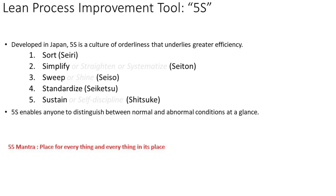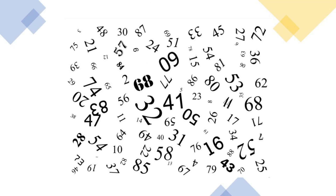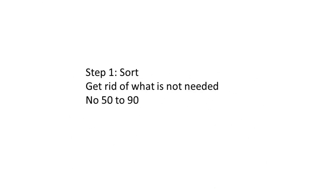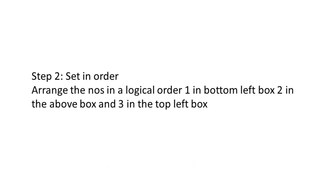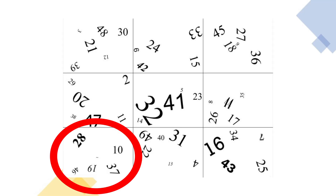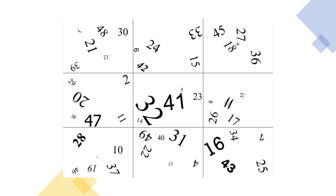To illustrate 5S, I generally ask people to do a small exercise: find numbers one to 49 in order within 20 seconds from an unsorted set — you will not be able to find more than 10 numbers. Now the things are sorted — anything not needed (numbers 50 to 90) has been removed from the data set, and you will be able to find up to 15 numbers. Next, we set them in order with a logical arrangement: one is placed in the bottom left box, two above it, three above that, and so on. People are now able to identify up to 20 numbers.